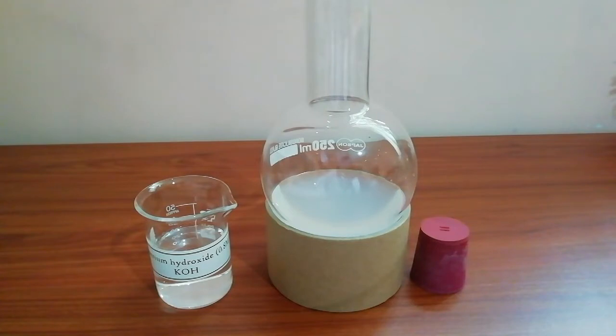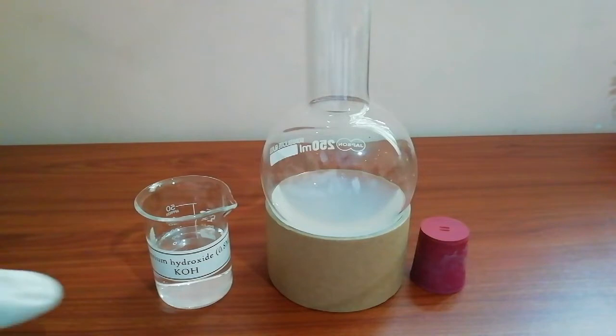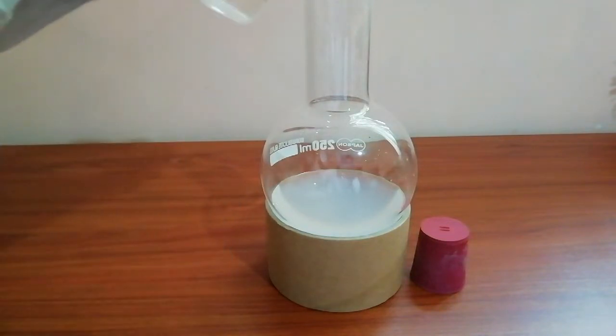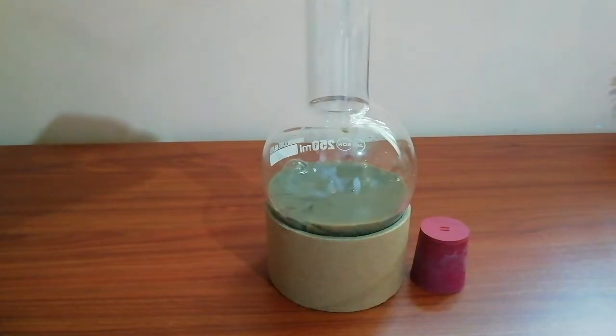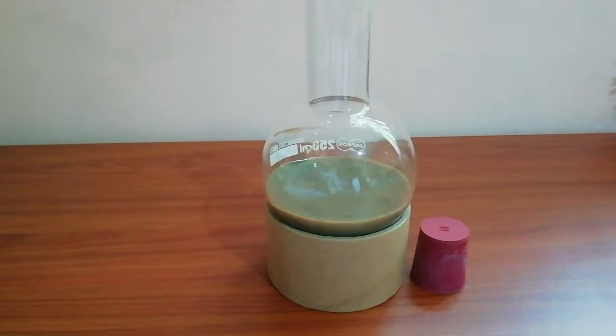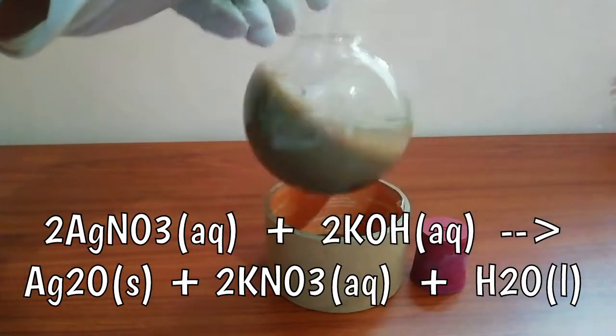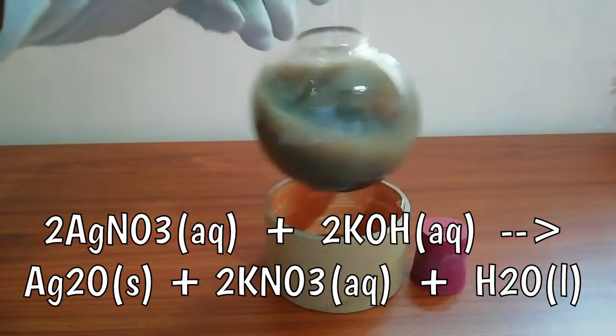Then I add 35 milliliters of potassium hydroxide. Potassium hydroxide reacts with silver nitrate and forms silver oxide.